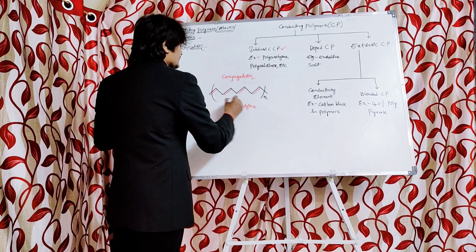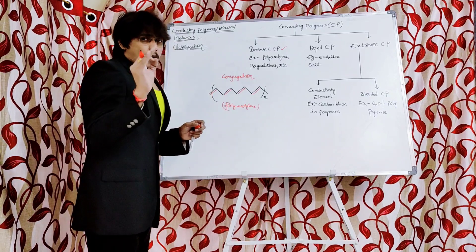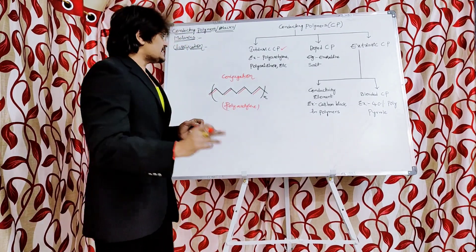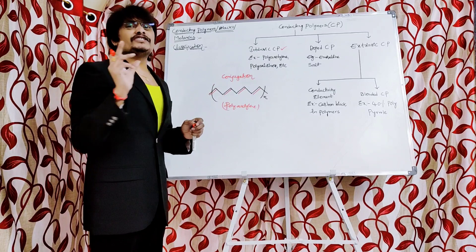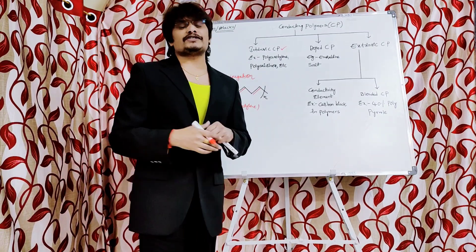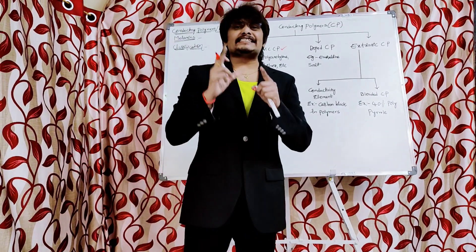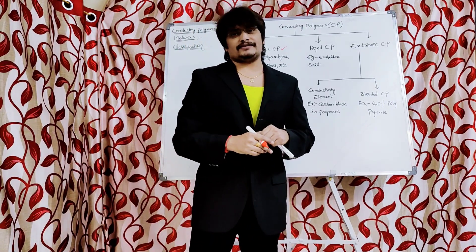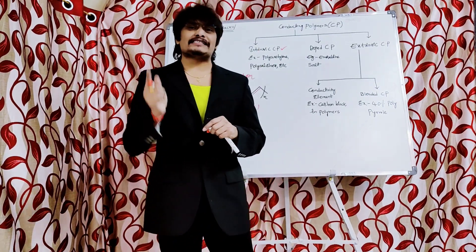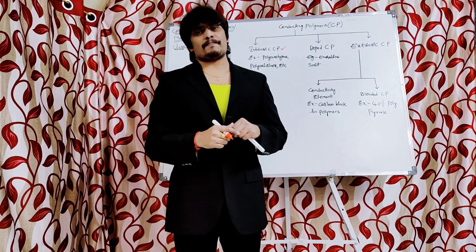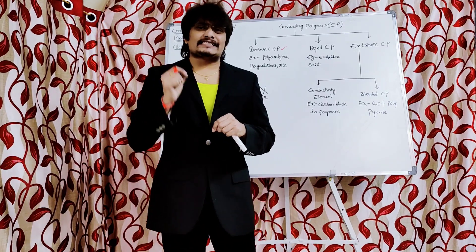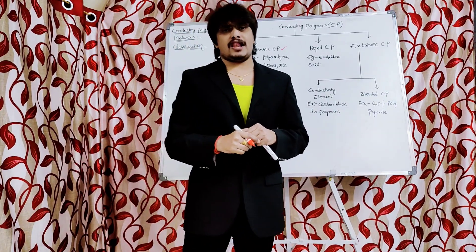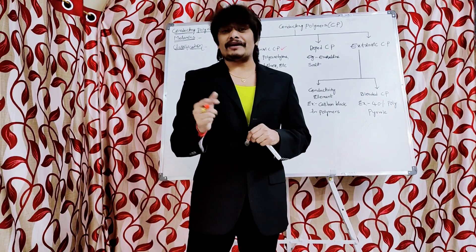In polyacetylene, the alternate double bonds represent conjugation. Now, a double bond is made up of two bonds — one is a pi bond and the second is a sigma bond. Unlike the sigma bond, the pi bond is flexible, while the sigma bond is rigid.